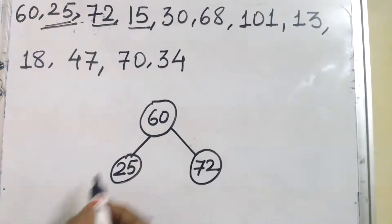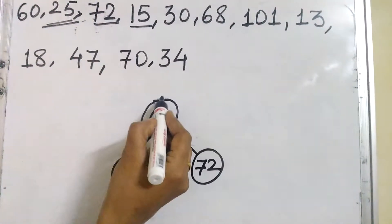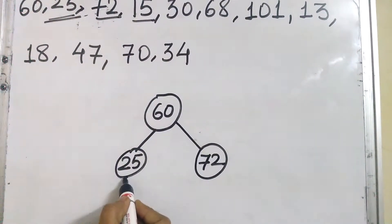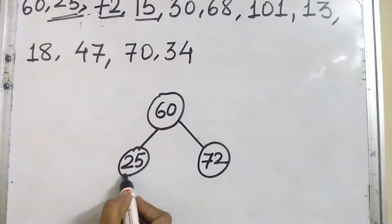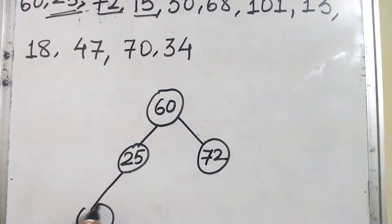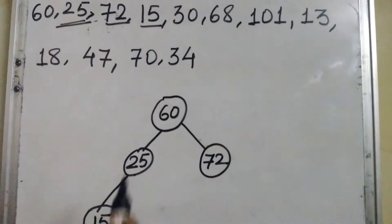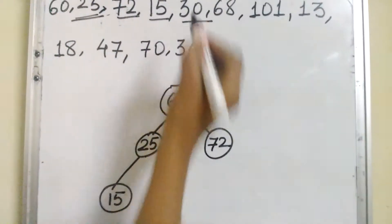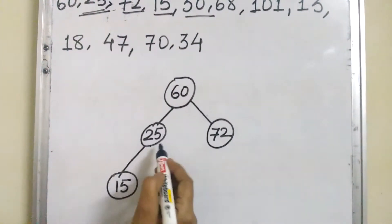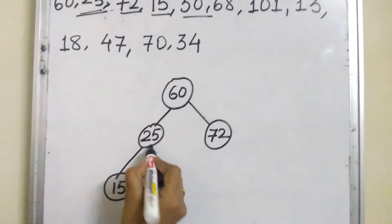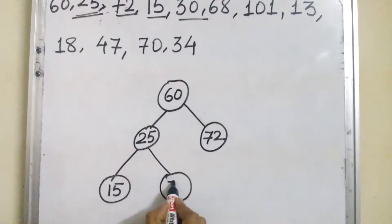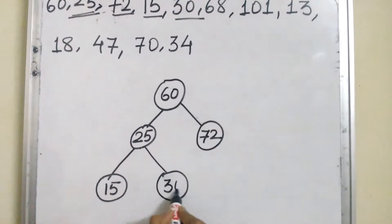Next value is 15. From the root, go to the left side. Again, it is less than 25, so go to the left side again. Next value is 30. From the root, it goes left. From 25, it is a greater value, so it is inserted at the right side of 25.